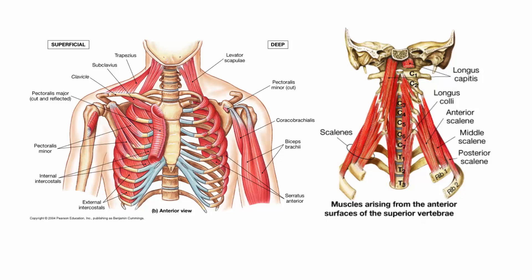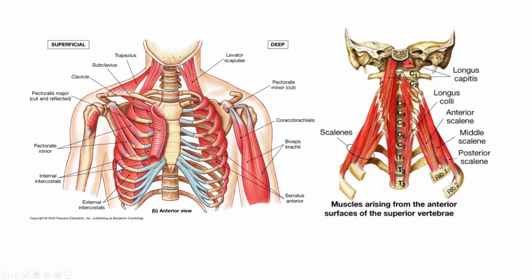Looking at some of the other muscles of inspiration and expiration — we have our external intercostals and internal intercostals. Remember, 'costal' refers to ribs, and these muscles are in between the ribs. When you order barbecued ribs, that's actually what you're eating — the intercostals.